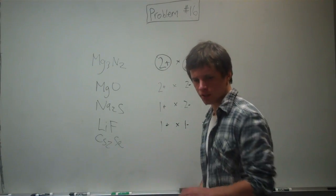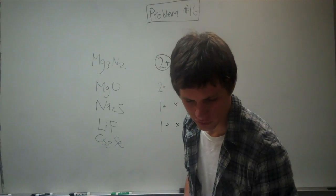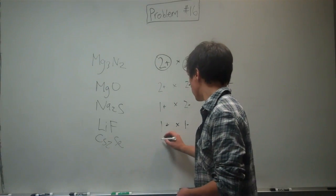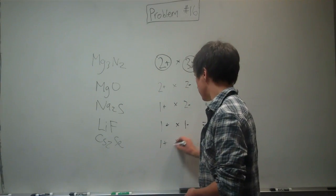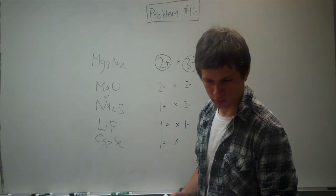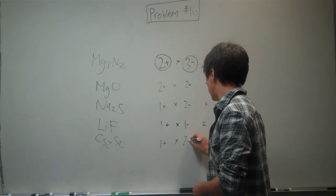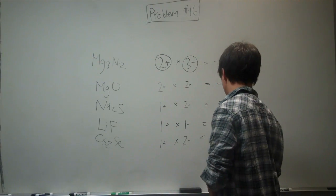And cesium, I believe, is in the first period, I mean in the first group. So, 1 positive times selenium, 2 negative equals negative 2.